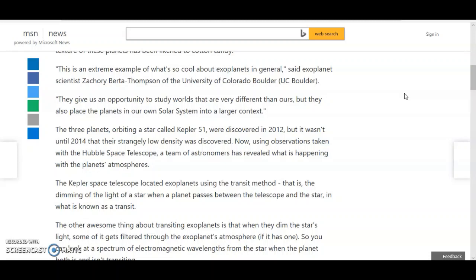Now, using observations taken with the Hubble Space Telescope, a team of astronomers has revealed what is happening with the planet's atmospheres. The Kepler Space Telescope located exoplanets using the transit method - that is, the dimming of the light of a star when a planet passes between the telescope and the star in what is known as a transit. We call it twinkling of a star. The atmosphere makes the stars twinkle. Twinkle, twinkle little star, how I wonder what you are.